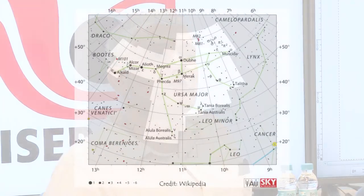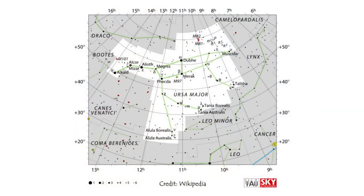We use a system called right ascension and declination to locate objects in the sky. It corresponds to latitude and longitude on Earth, so very often stars are named after their right ascension and declination.